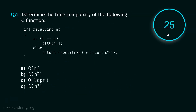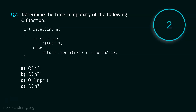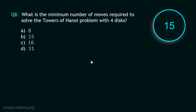The correct option is option A: order of n, or Big O of n. Now let's move to question number 8, and your time starts now.